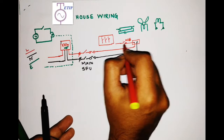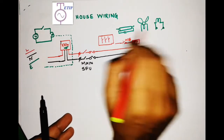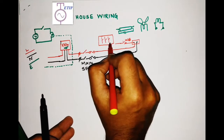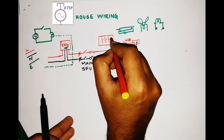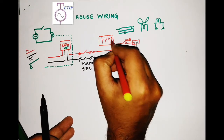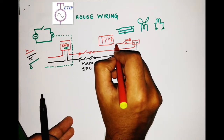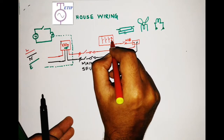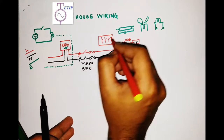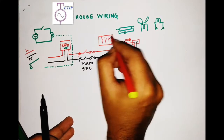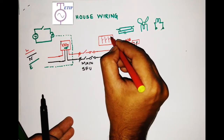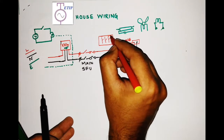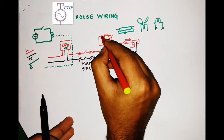Since there is an MCB provided, you don't necessarily need an additional fuse, but you can add a local fuse here as well. The supply will enter the fuse terminal first, and from the other end of the fuse it will go to one end of the switch — it will be looped across the switches.